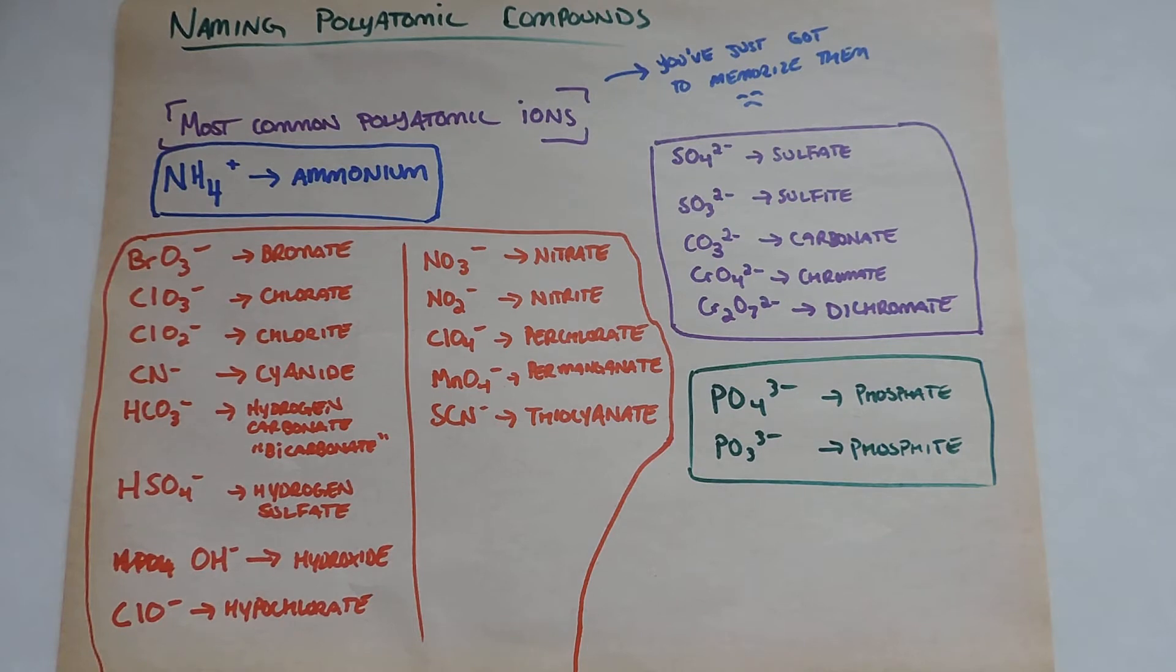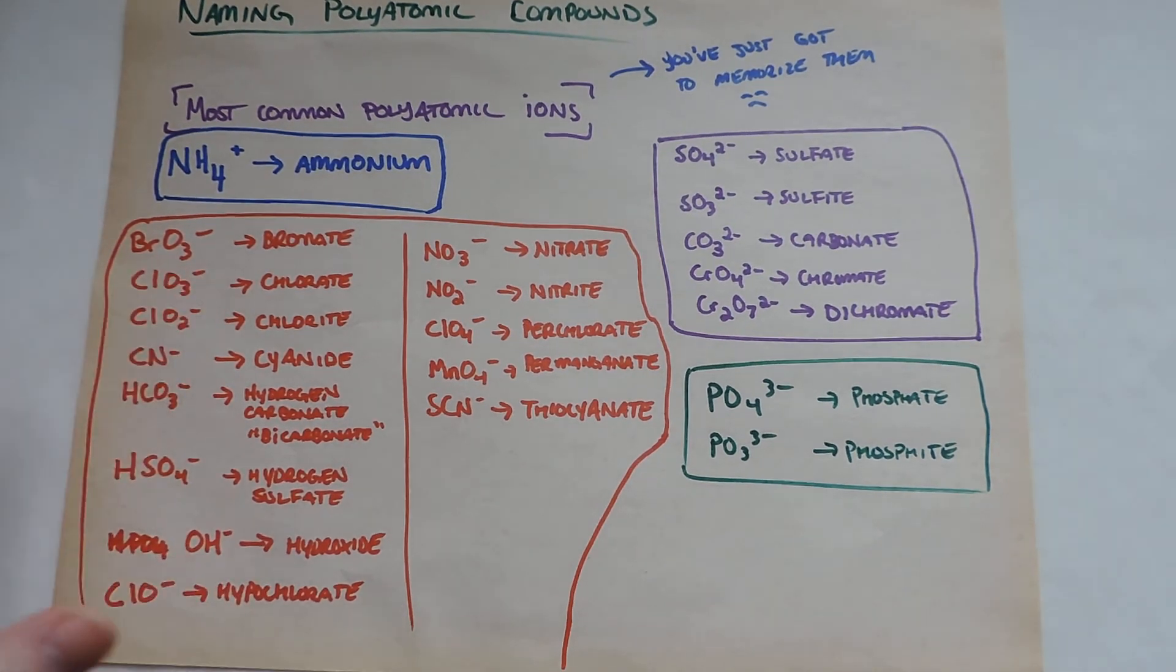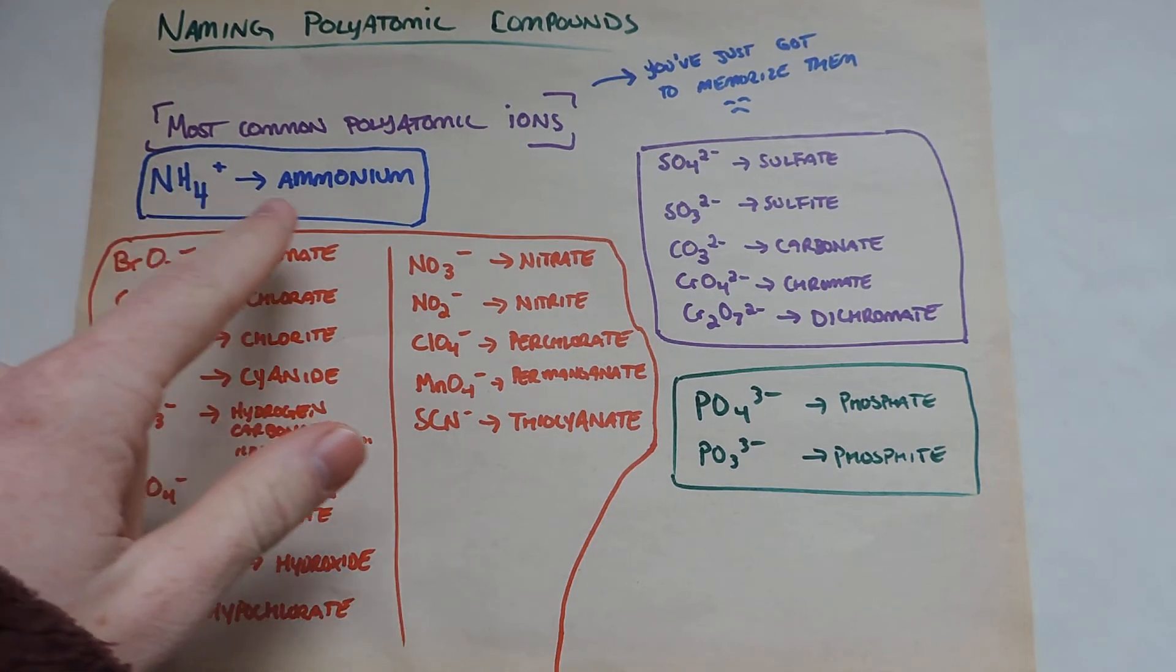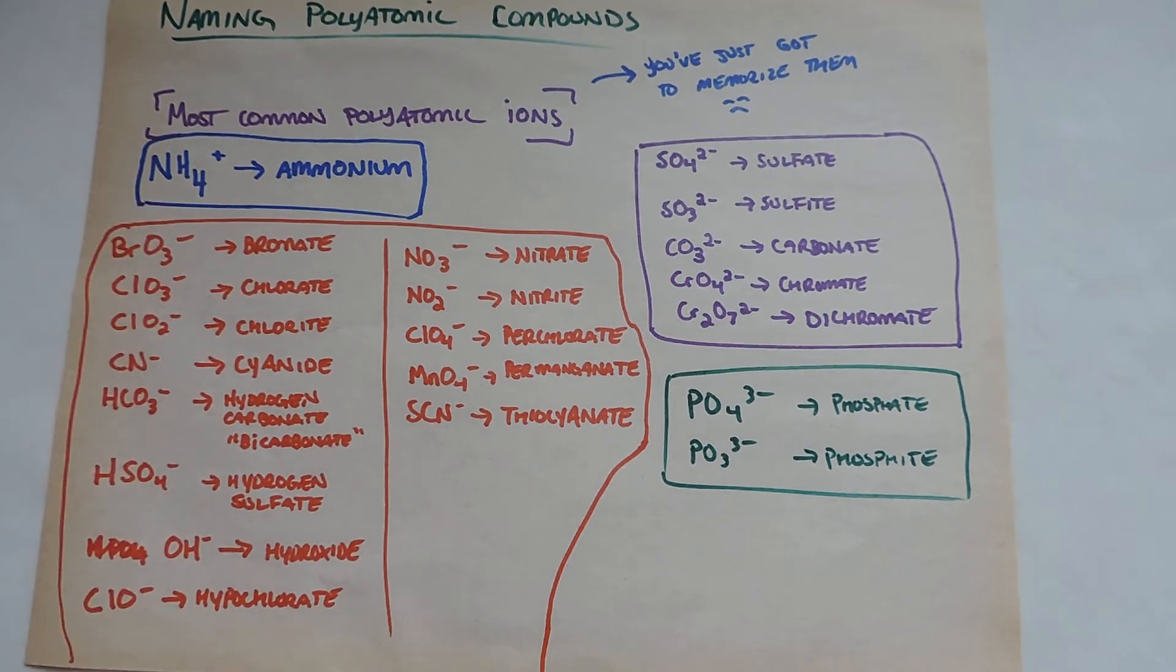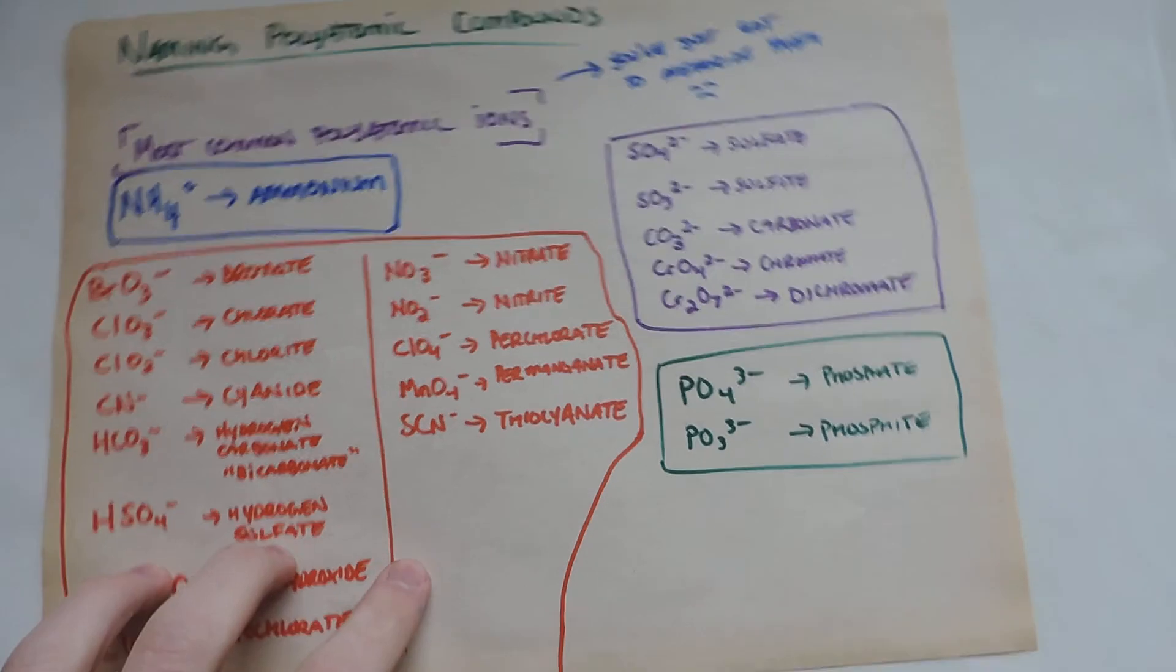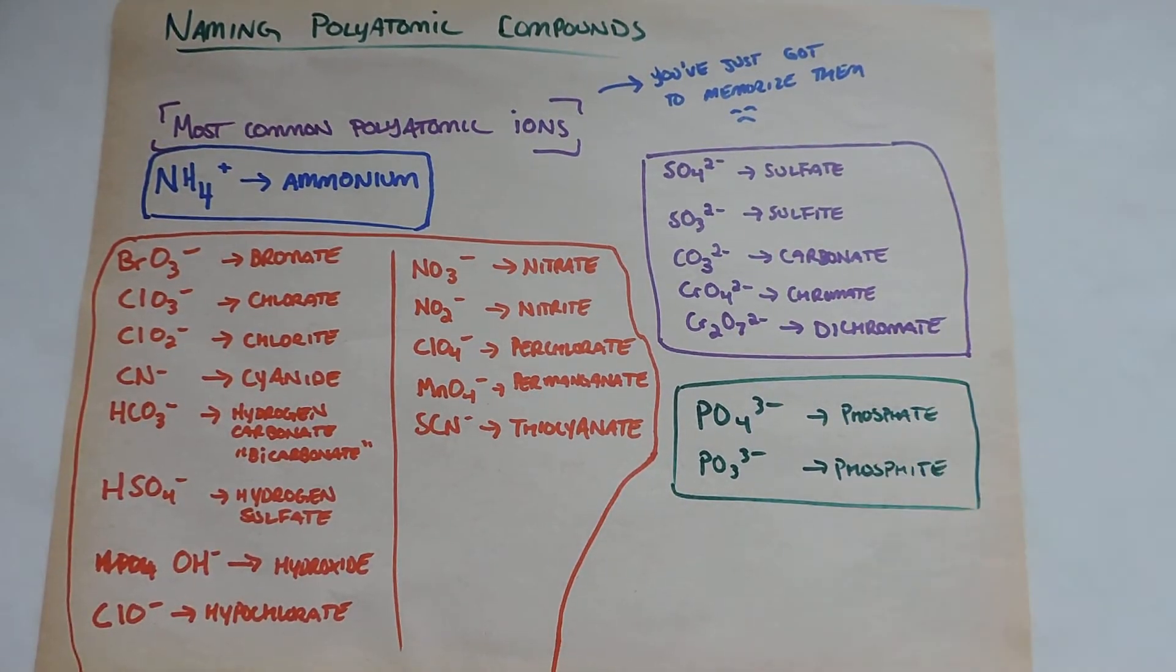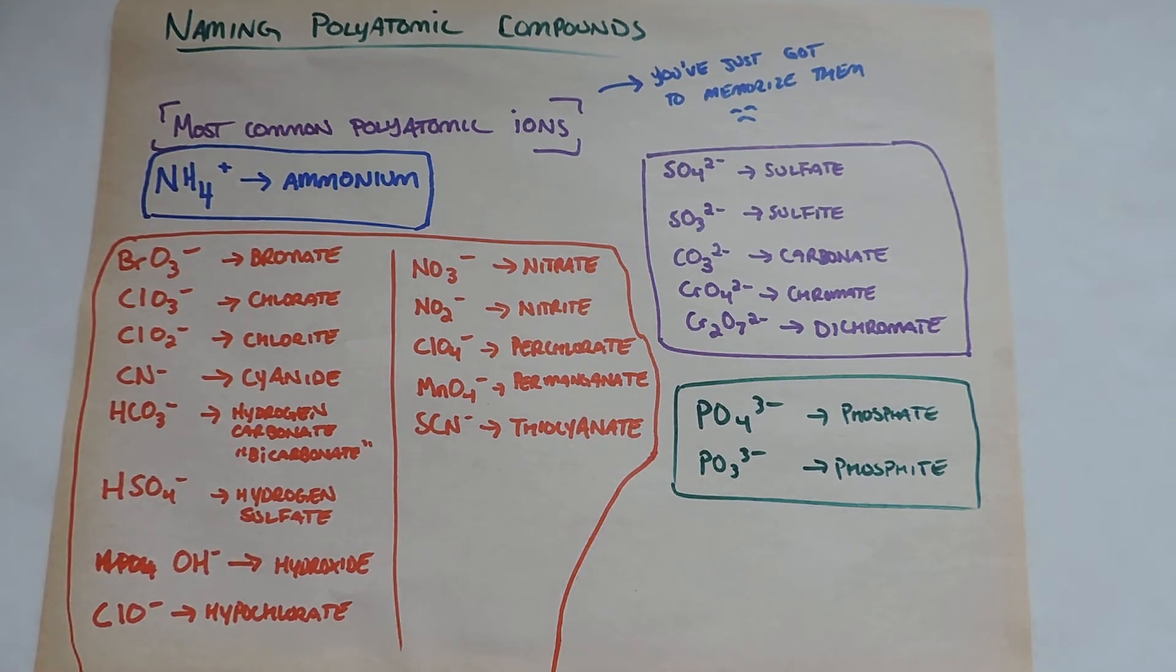It's polyatomic ions. So naming polyatomic compounds. So here are the most common polyatomic ions. This is not all of them, to be clear. But this is what I think are the most common. And I've categorized them in a way that may help you memorize them. And honestly, there are some things you can memorize that will help you.